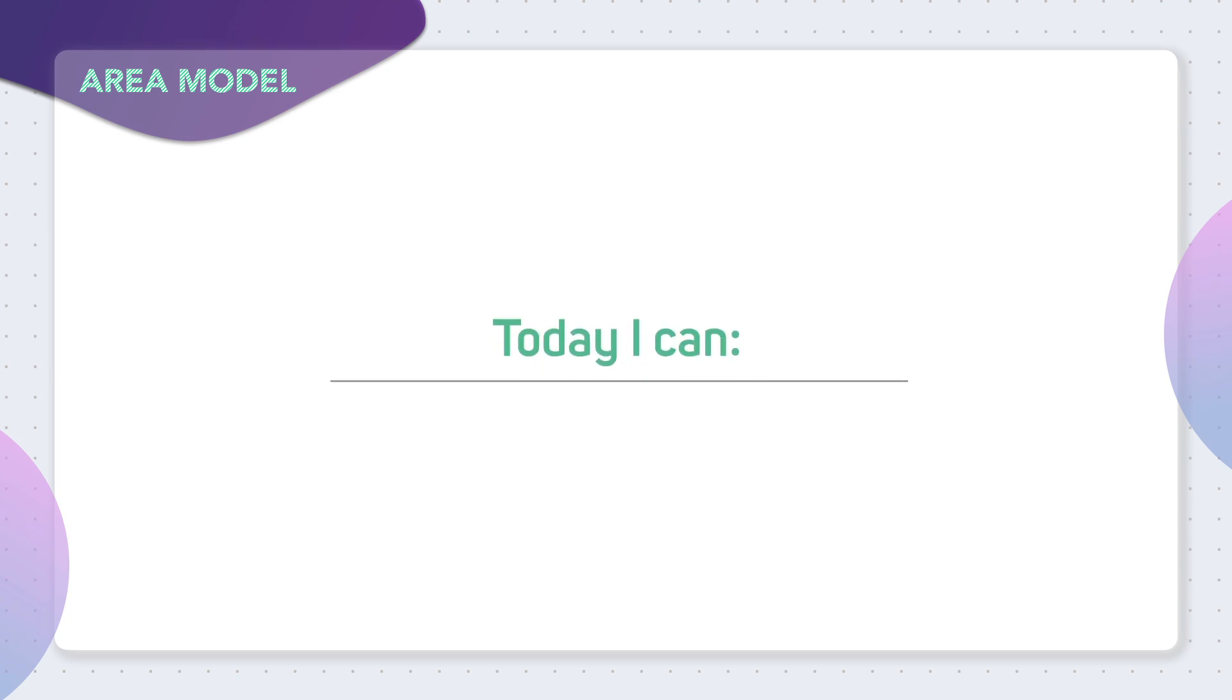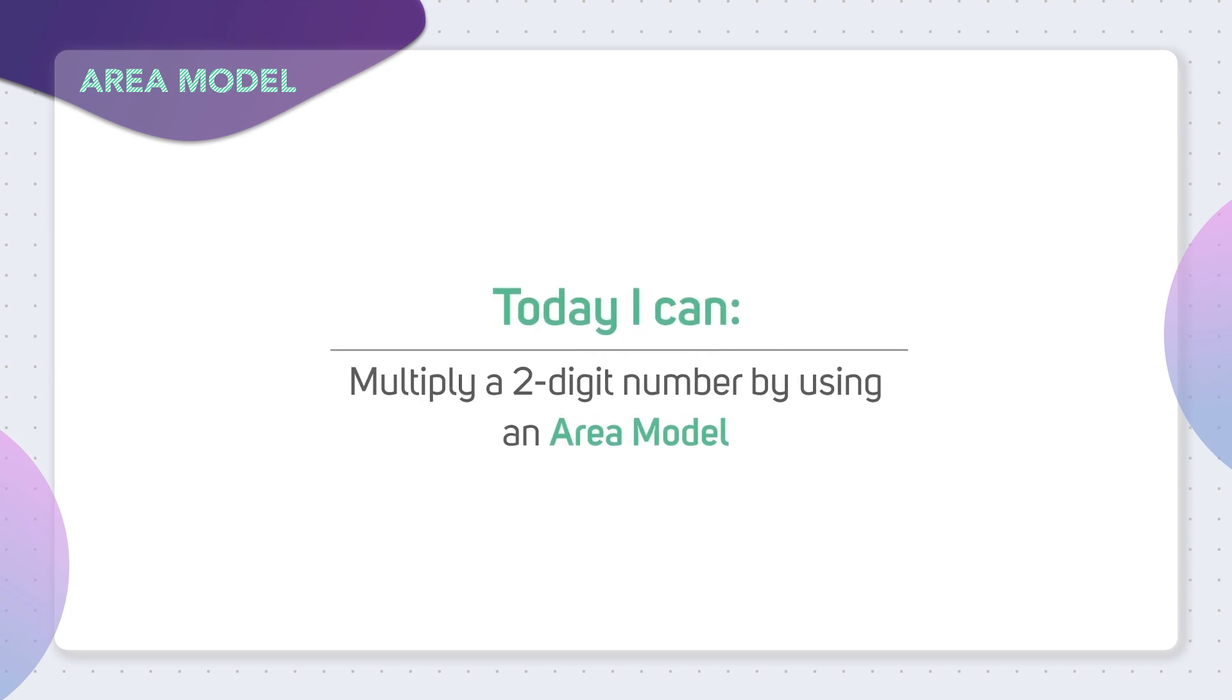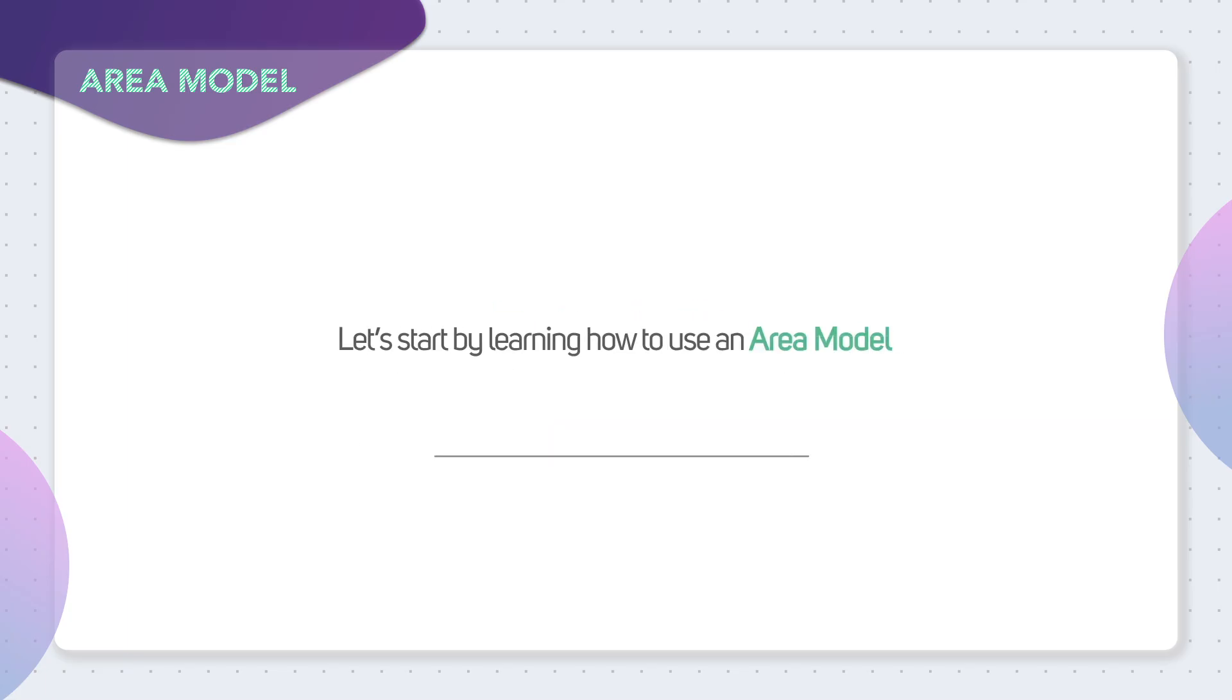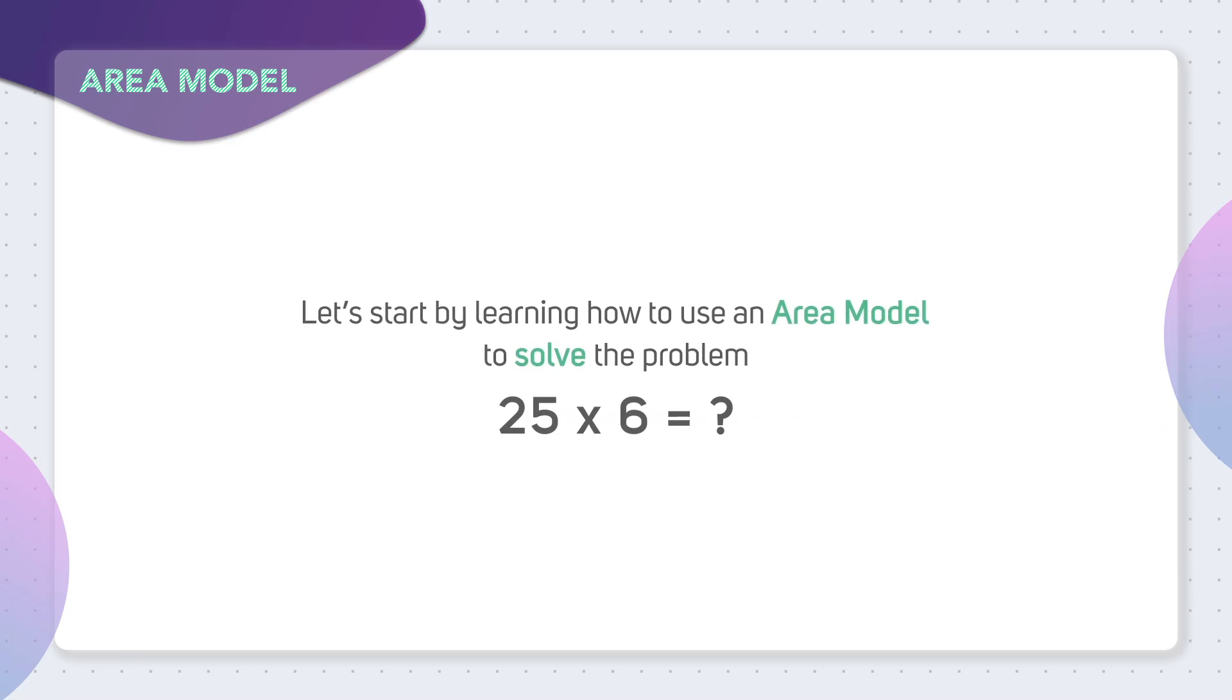Today we are going to be learning how to multiply a two-digit number by using an area model. Let's start by learning how to use an area model to solve the problem 25 times 6.